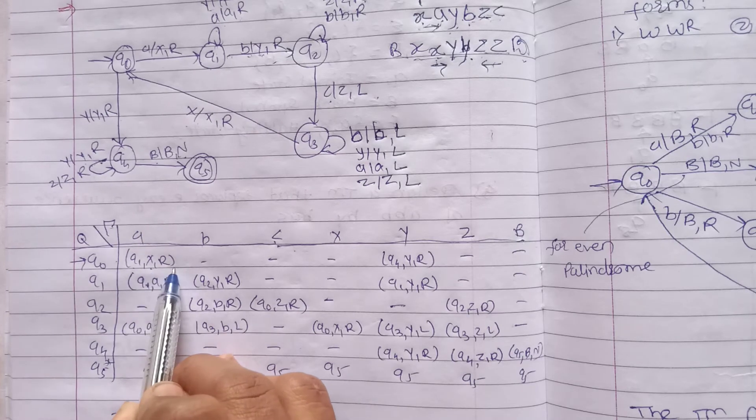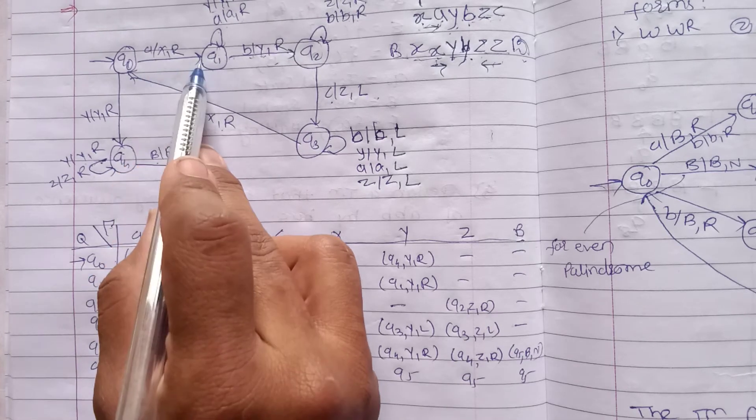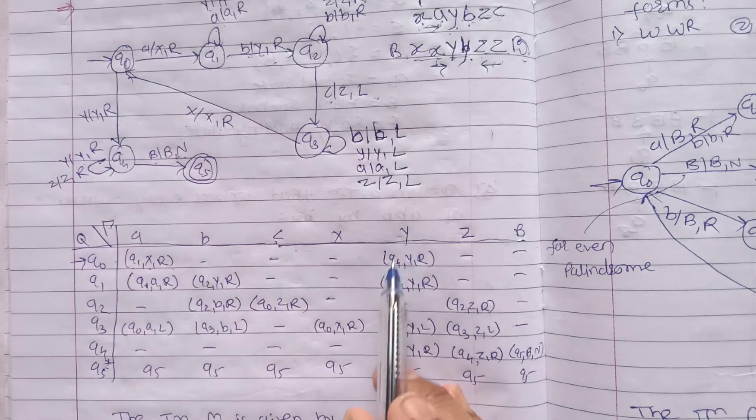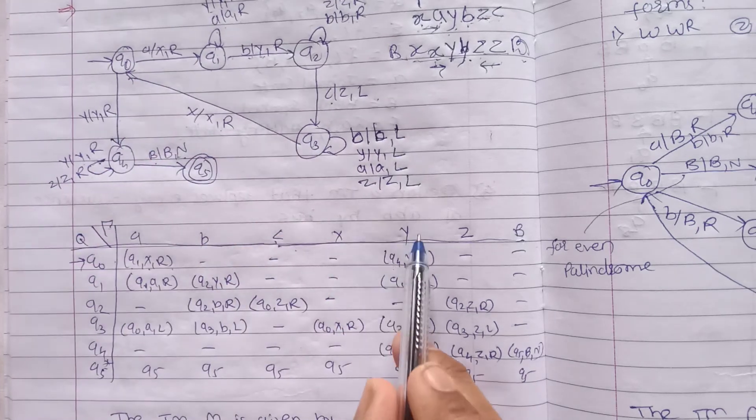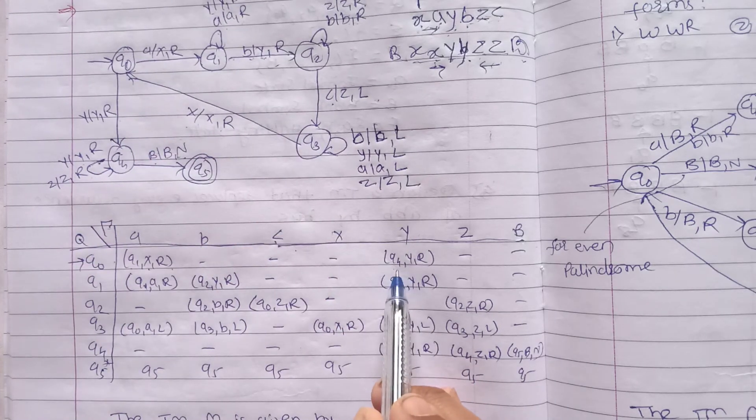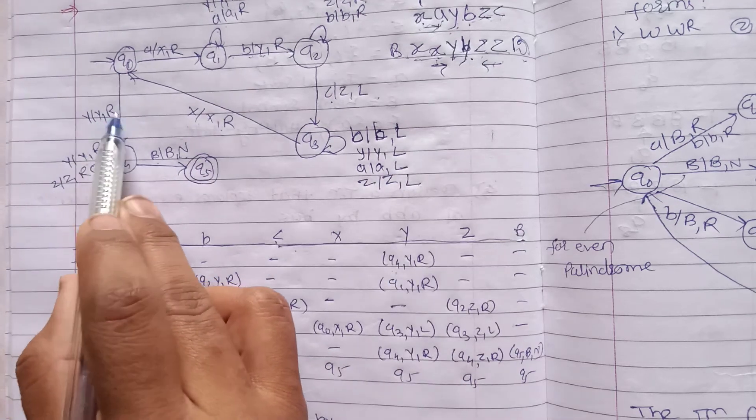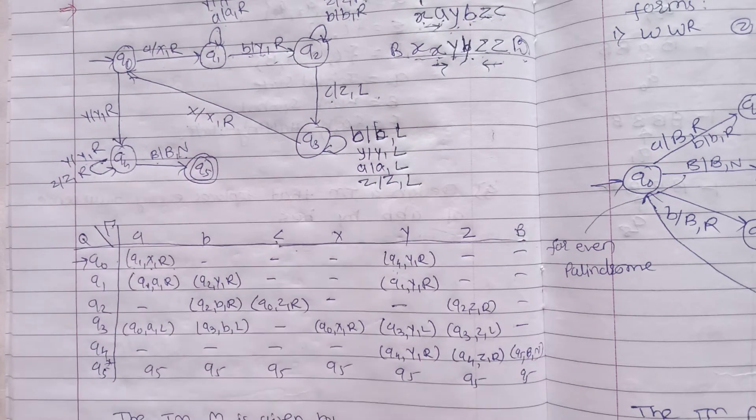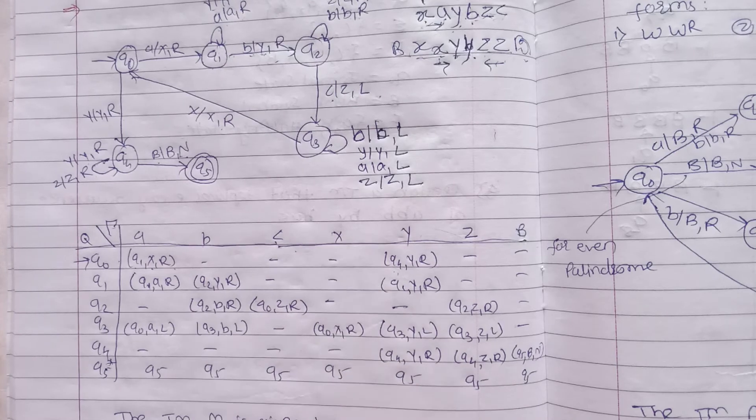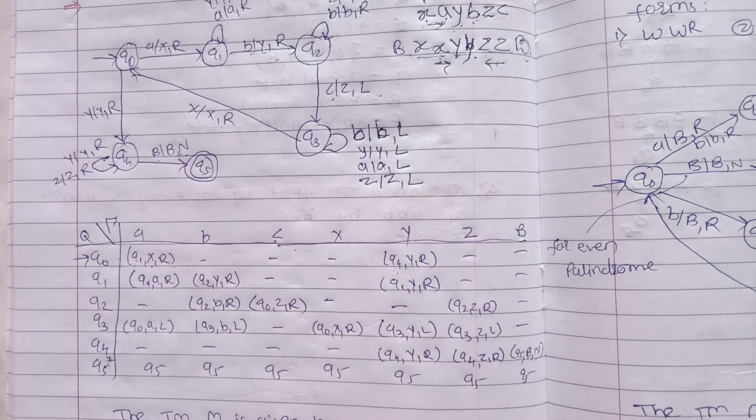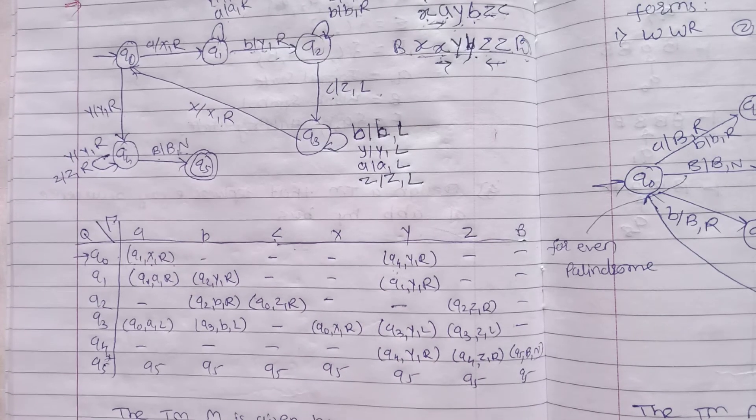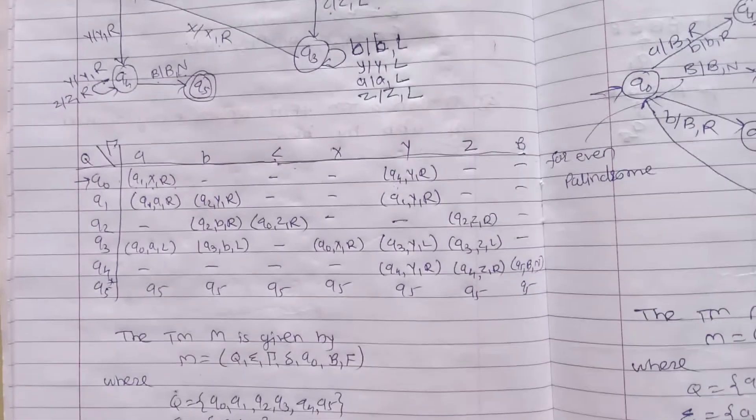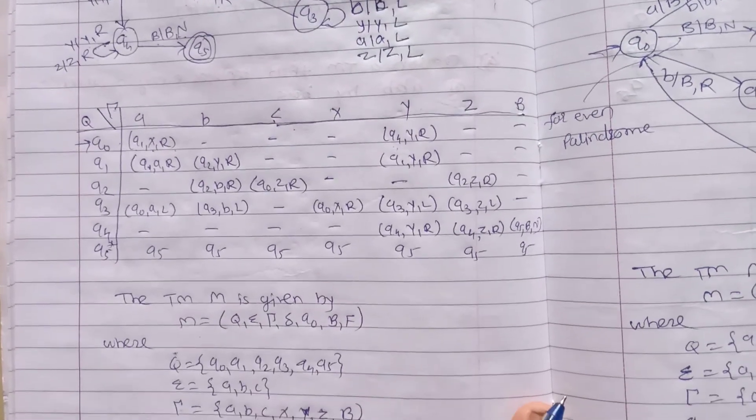From q0 with input a, next state will be q1, a will be replaced by x, movement is right. For y, next state is q4, y will be replaced with y, movement right. In the same way we have to find out the transitions for all the states for all the tape elements.